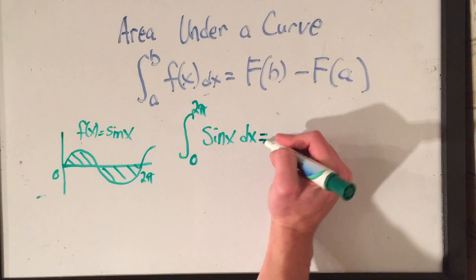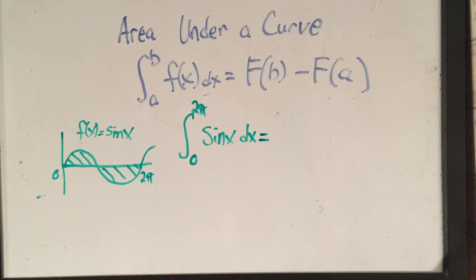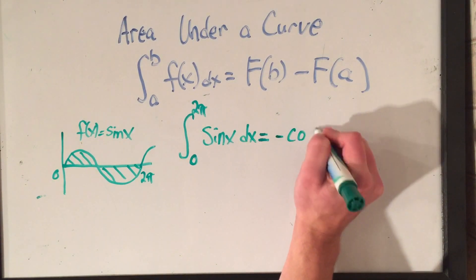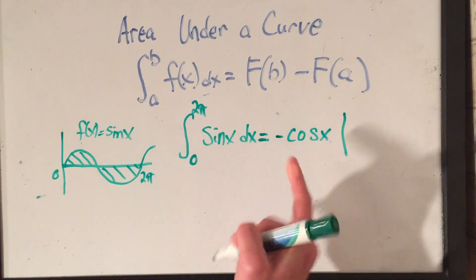And if you recall that the derivative of cosine x was minus sine x, that means the anti-derivative of sine x is minus cosine x. And I think you can think,